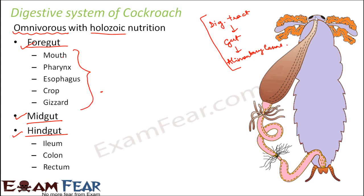Starting from the mouth, then comes the pharynx, followed by the tube-like esophagus, then the hollow crop structure for storage of food, and finally the gizzard. Everything from the mouth to the gizzard constitutes the foregut. After the gizzard begins the midgut.